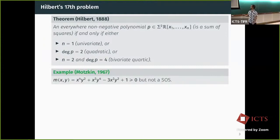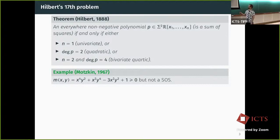Here is an example: x⁴y² + x²y⁴ − 3x²y² + 1. This polynomial is non-negative — which is a high school exercise — but it is not a sum of squares, which is perhaps a little more advanced.